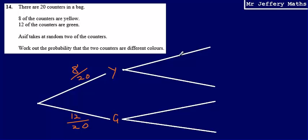Now on his second pick, as he takes at random 2 of the counters, and again if you think about it like choosing one counter, then choosing another without replacing, that means that on his second pick there are going to be fewer yellow counters or green counters, depending on what he selected first.